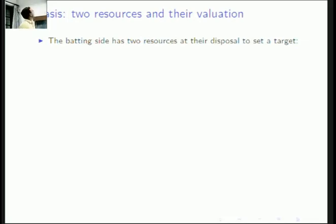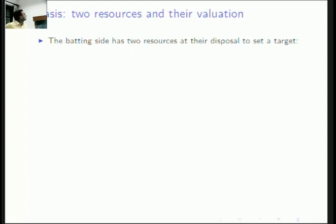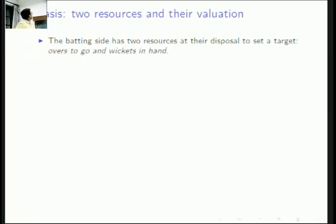Here's the basis of the Duckworth-Lewis method. The batting side — whichever team is batting, whether first or second — has two resources at its disposal: overs and wickets. The team batting first is trying to set a target, and it should try to set as large a target as possible — maximize its score using these two resources.